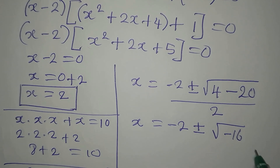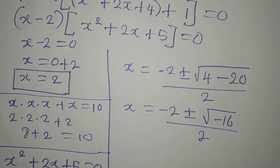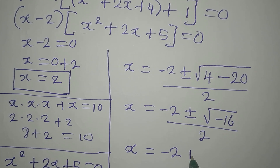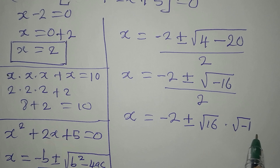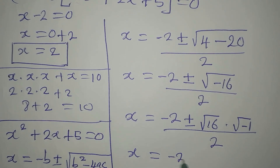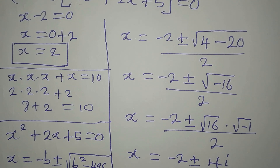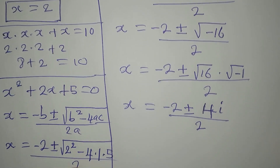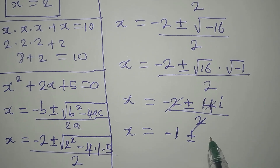We cannot find the square root of negative 16 directly, but we can write it as square root of 16 times square root of negative 1. Square root of 16 is 4, and square root of negative 1 is the imaginary unit i, giving 4i. So X equals minus 2 plus or minus 4i, all over 2, which simplifies to minus 1 plus or minus 2i.